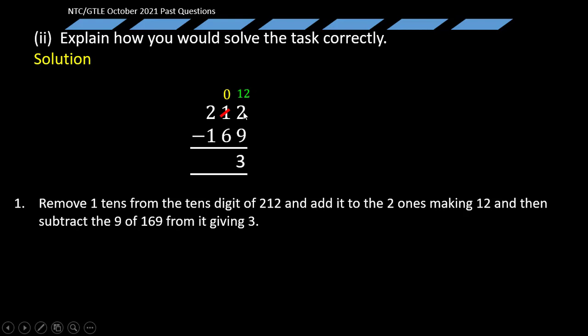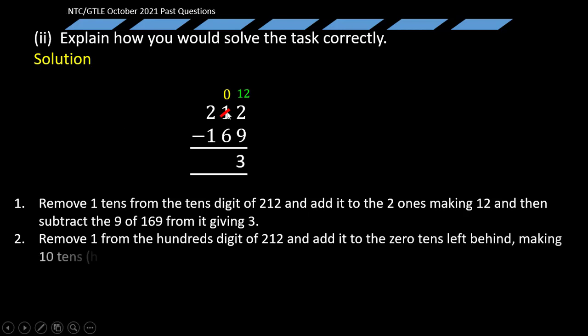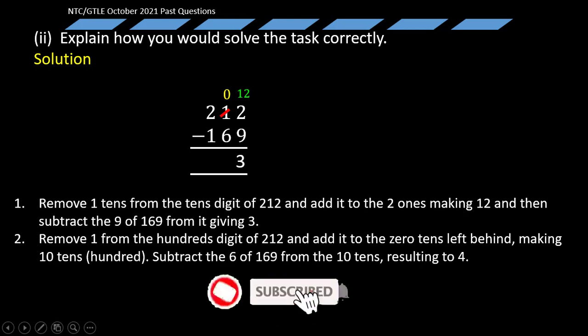Now the second step: You remove one from the hundreds digit of 212 again and add it to the zero tens left behind, making ten tens. That's what ten tens is simply, a hundred. Subtract the six of 169 from the ten tens resulting in four. What does that mean?